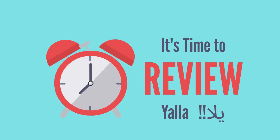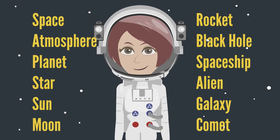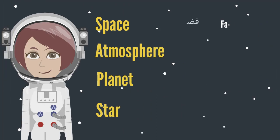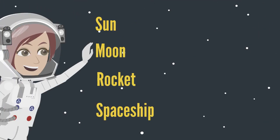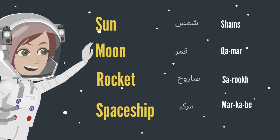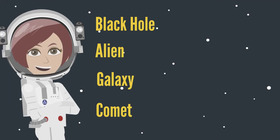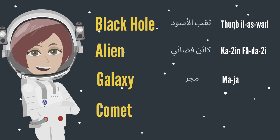It's time to review. Make sure you stay until the end to go over the plural forms. Space — Fadaa. Atmosphere — Ghilaaf al-jawi. Planet — Koukab. Star — Nijmeh. Sun — Shams. Moon — Amar. Rocket — Saarookh. Spaceship — Merkabah fadaiyeh. Black hole — Thuqb al-aswad. Alien — Kain fadaiyeh. Galaxy — Majerah. And comet — Muthannab.